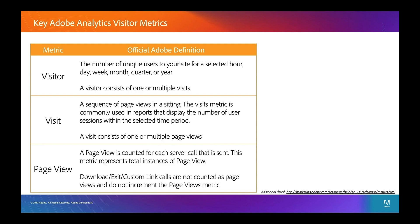A visit is a sequence of page views in a sitting. The visits metric is commonly used in reports that display the number of user sessions within the selected time period — just think of it as somebody coming to your site and going to one or more pages. The difference between a visit and a session is that a session closes when you close the browser.